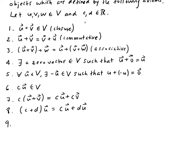Ninth: you have c times d times u. This is the same as if you multiply the two scalar values and then multiply that with u, you'll get the same value.